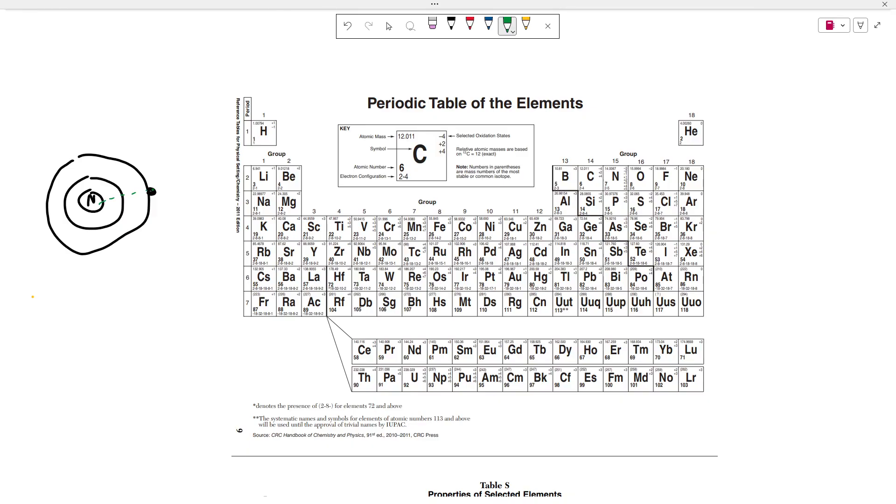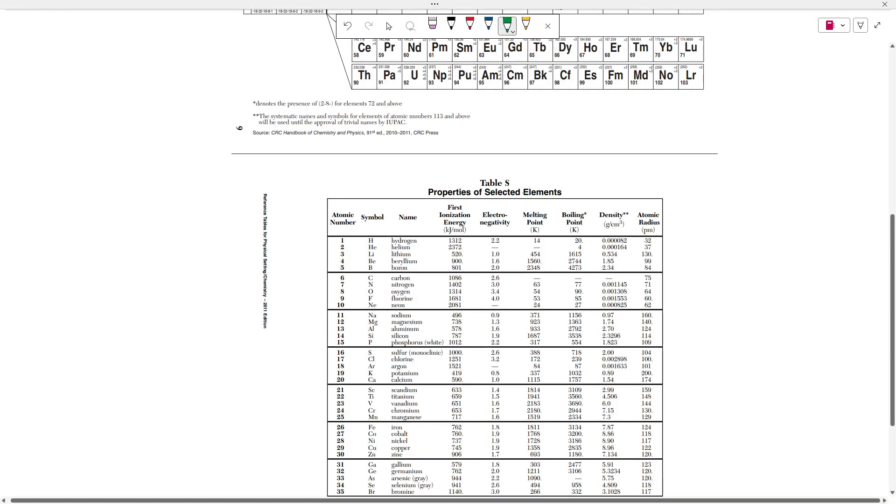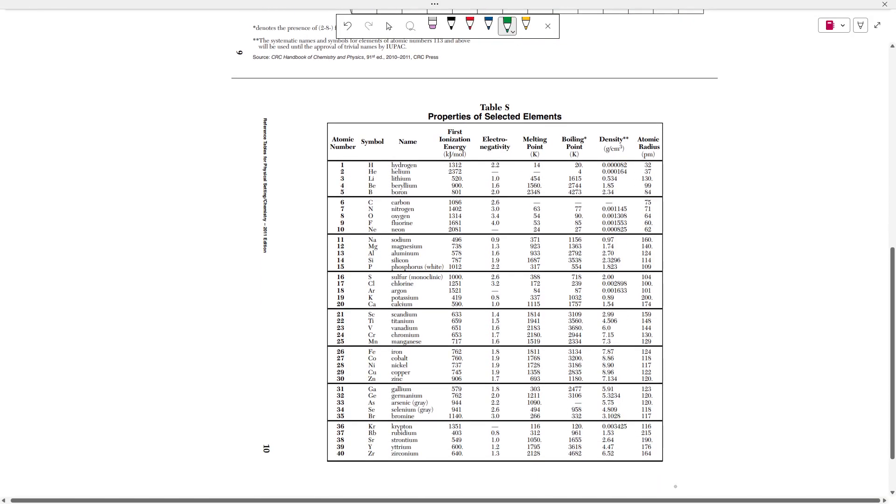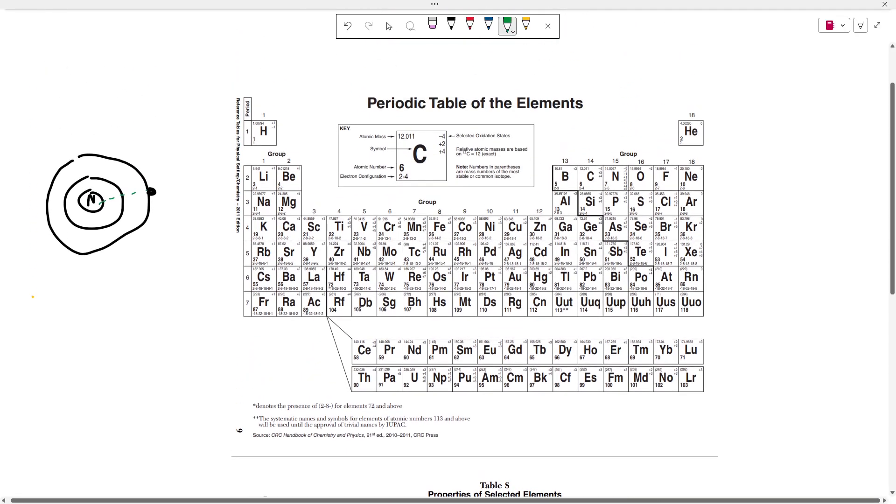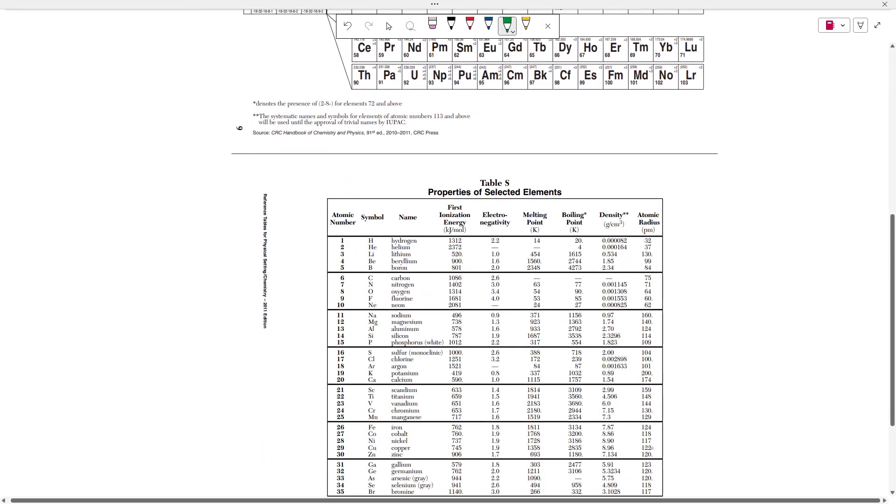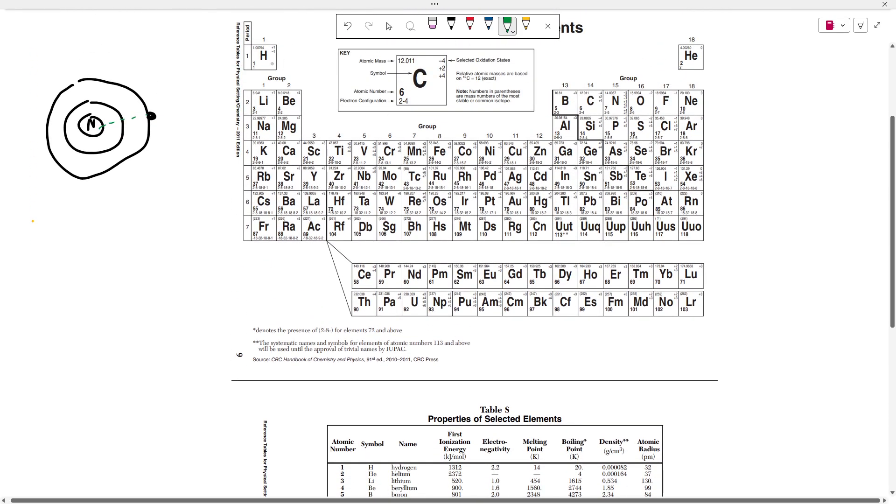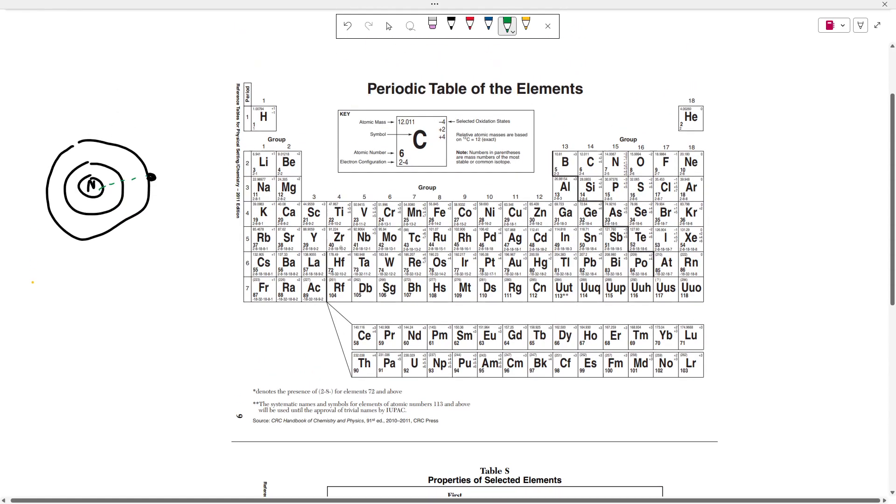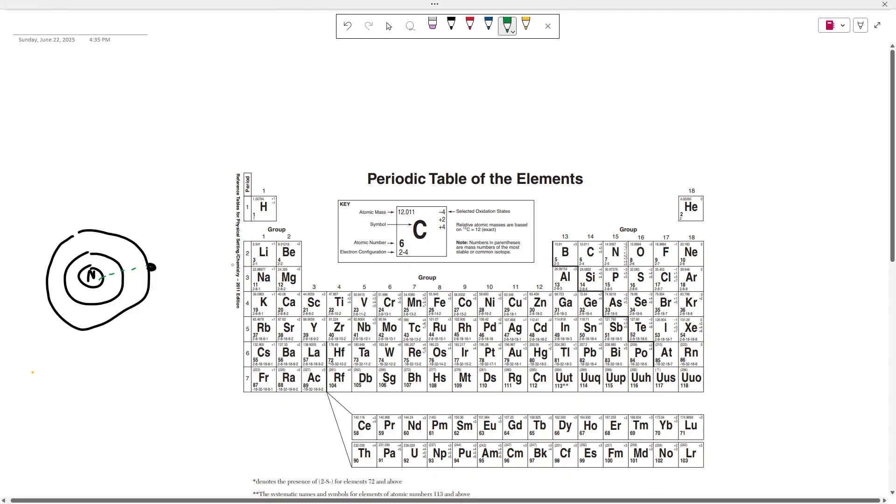And if you ever want to find the specific atomic radius for an element, you can move down, flip the page to get the table S, and you can find the atomic radius listed here. So if you ever forget the information in this video, don't panic, just know that you could always find the atomic radius, write it down somewhere on your periodic table of elements, and then you could see the trend for yourself.